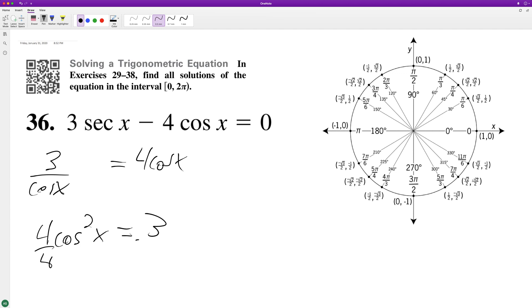Divide through by 4, and then we have cosine squared x equals 3 over 4. Take the square root of both sides, we get cosine of x is equal to plus or minus square root of 3 over 2.